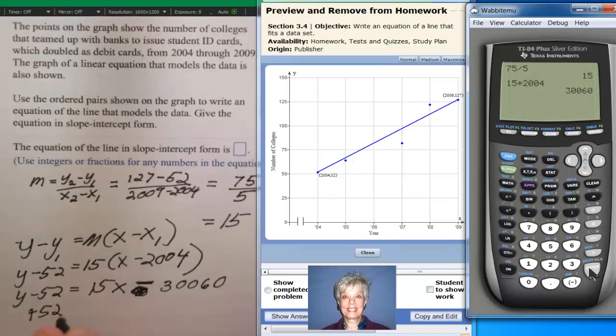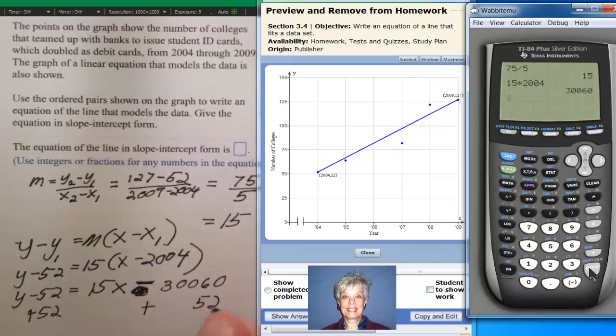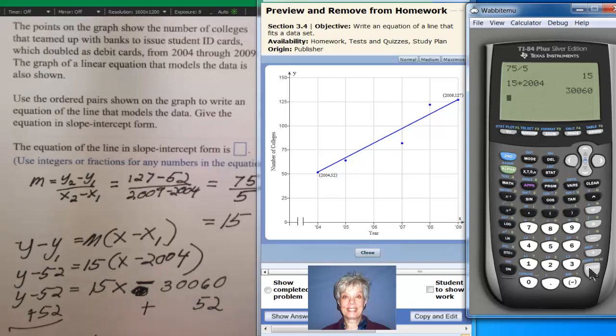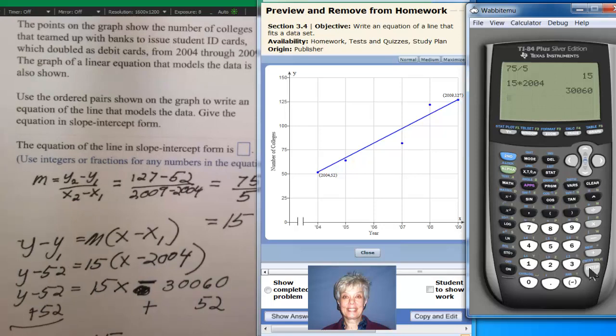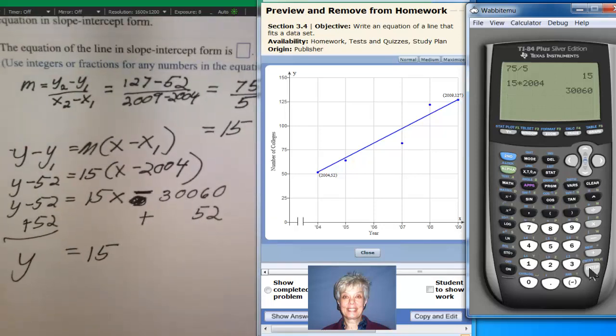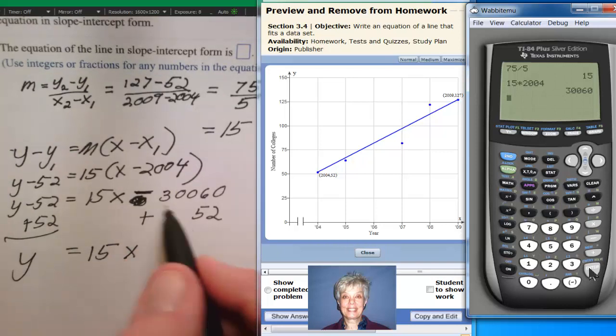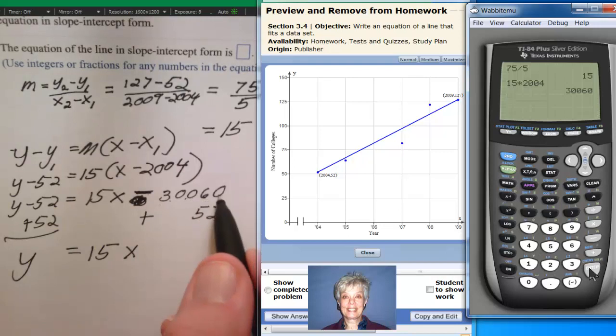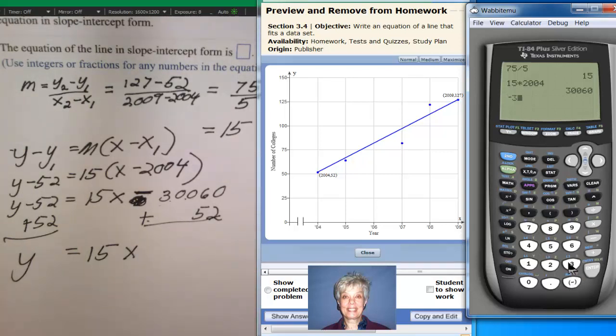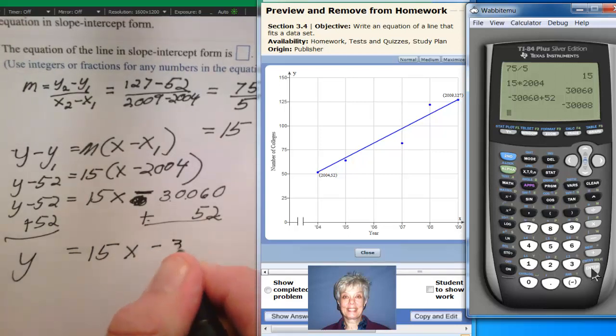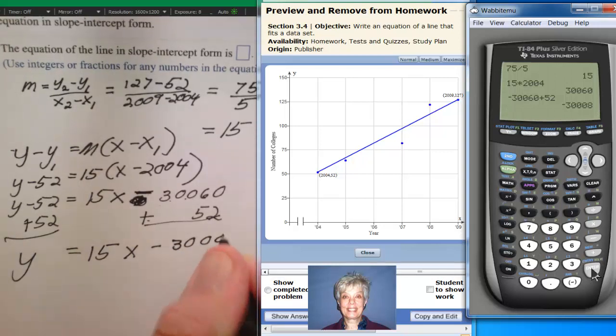And I'm going to add 52 to both sides of the equation to get y by itself. I went too far down again. Here we are. 15x. Now, I have minus, which is the same as negative, negative 30060 plus 52. I'm going to put that in the calculator. Enter. And that gives me 30008, negative, minus 30008.